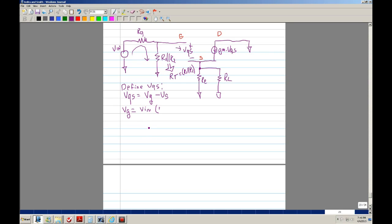So we'll say that it's RT divided by RG plus RT. So that's VG.